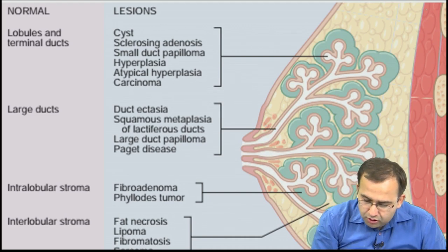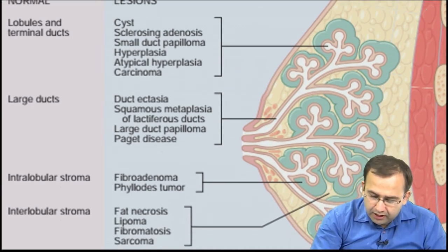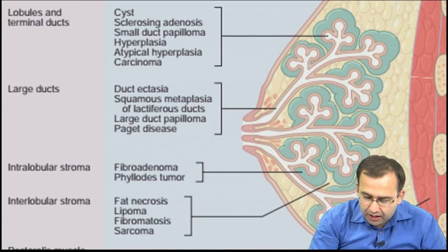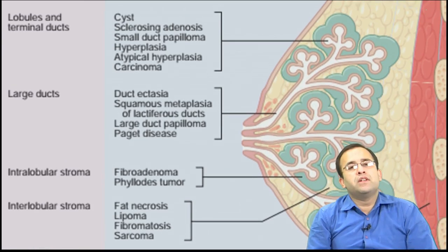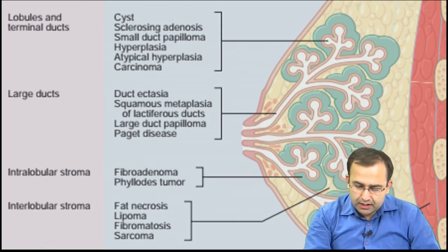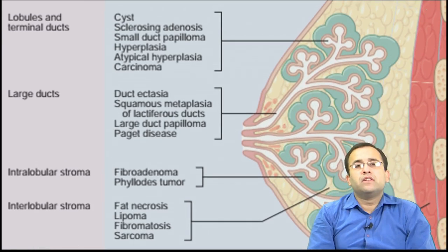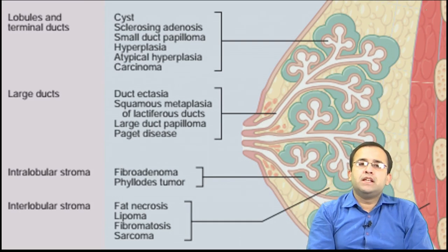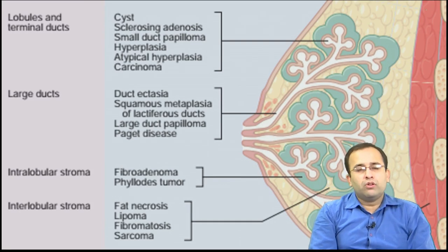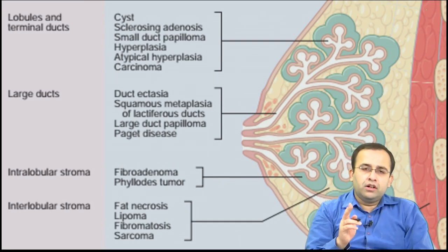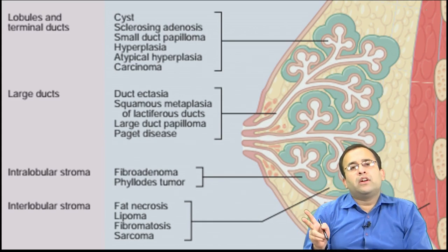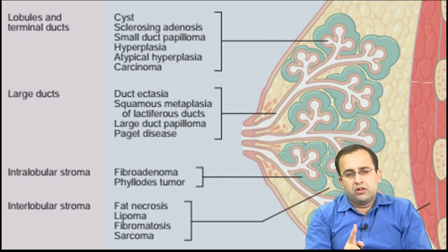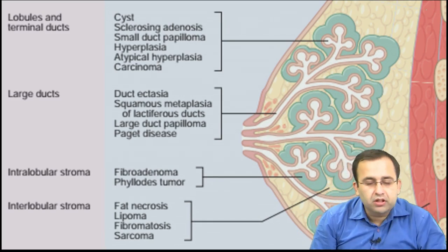From the breast anatomy: lobules and terminal ducts give rise to sclerosing adenosis, small duct papillomas, hyperplasias, atypical hyperplasias, and carcinomas. Large duct lesions include Paget's disease and duct ectasia. Intraductal papilloma is a large duct lesion — not from TDLU. The answer for Q125 was C, intraductal papilloma.